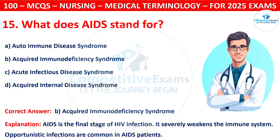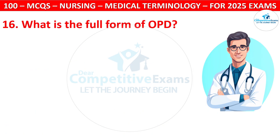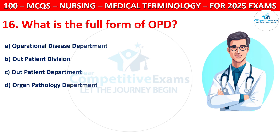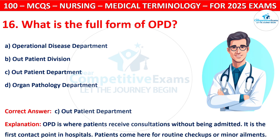Question 16: What is the full form of OPD? Options are: Operational Disease Department, Outpatient Division, Outpatient Department, or Organ Pathology Department. The correct answer is C, that is Outpatient Department. OPD is where patients receive consultation without being admitted. It is the first contact point in hospitals. Patients come here for routine checkups or minor ailments.